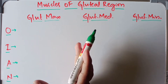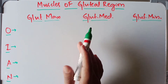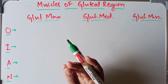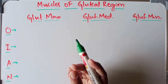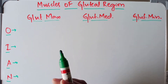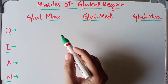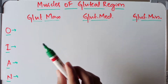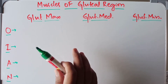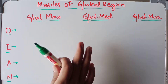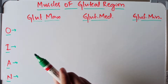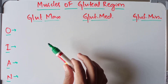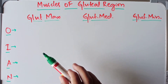The major muscles of the gluteal region are larger in size and placed superficially. They are the main extensors, abductors, and medial rotators of the thigh. The minor muscles are smaller and placed deeply under the cover of the major muscles. They are lateral rotators of the thigh and help in the stabilization of the hip joint.